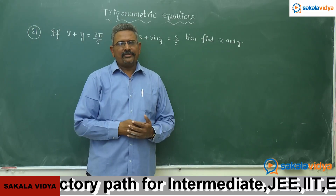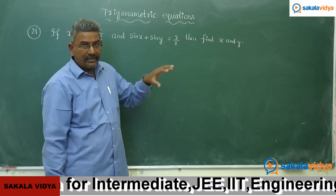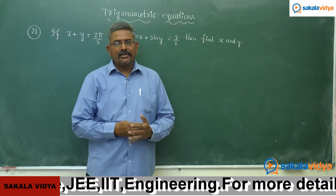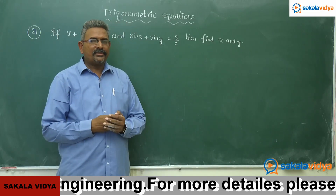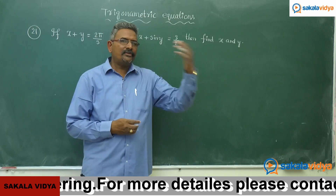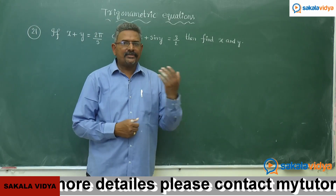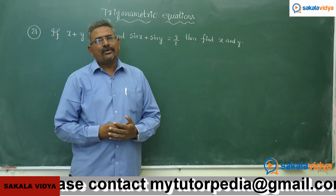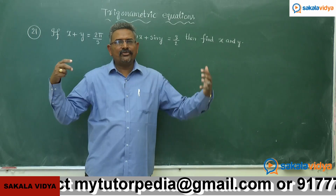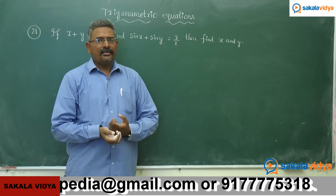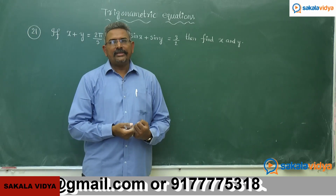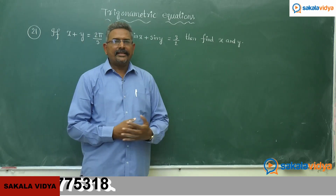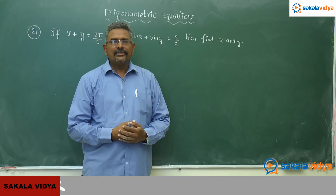There may be general solutions. First, sin x plus sin y has to be converted as a product of two trigonometric functions, so we apply the transformation formulae. One of the transformation formulae is sin C plus sin D. With the help of sin C plus sin D, we can find the x minus y value. After getting x minus y and x plus y, we solve these two linear equations in two variables to get x and y.